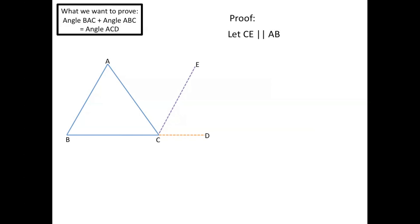Now because CE and AB are parallel, we know that angle BAC is equal to angle ACE, since they're alternating angles, which is a property of parallel lines.